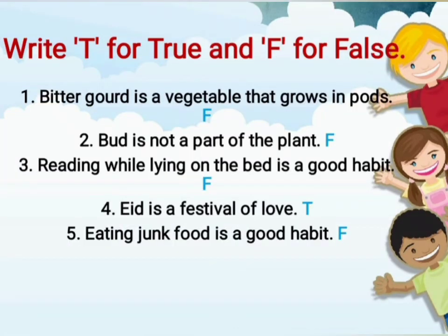Children, let's discuss the last question now: write T for true and F for false. If the statement is correct you have to write T, and if the statement is incorrect you have to write F. The first part: bitter gourd is a vegetable that grows in a pod. Children, this statement is incorrect, so you have to write F. Second one: bud is not a part of a plant. This statement is also incorrect — bud is an important part of a plant — so you have to write F.